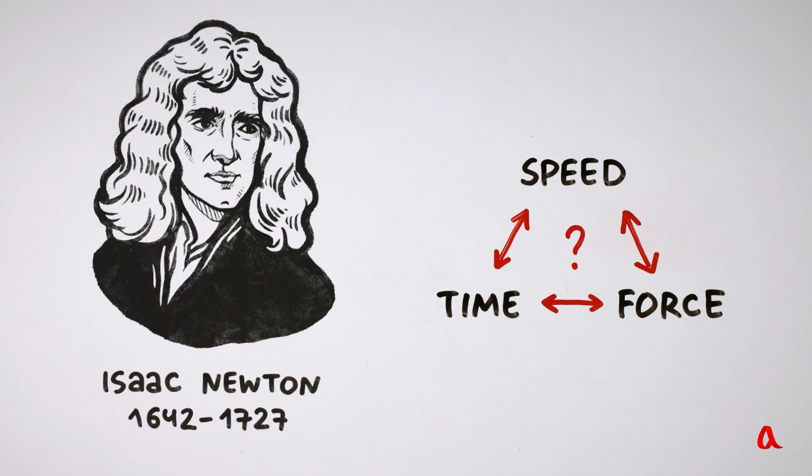Isaac Newton, the great English physicist, was the first to describe this relation. He did it in his famous work called Mathematical Principles of Natural Philosophy.